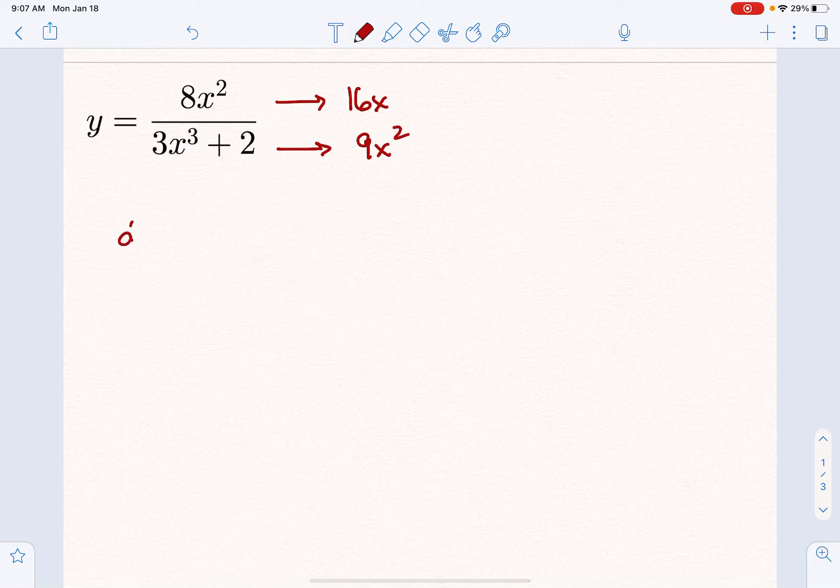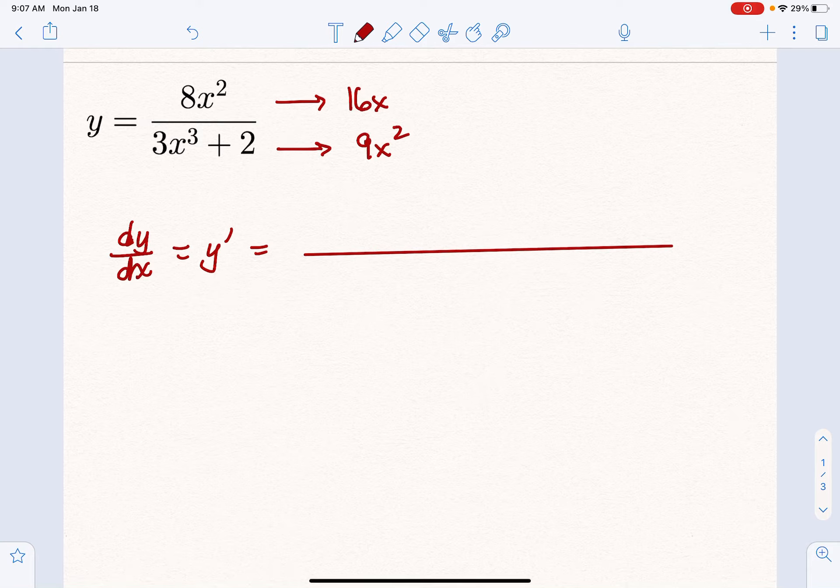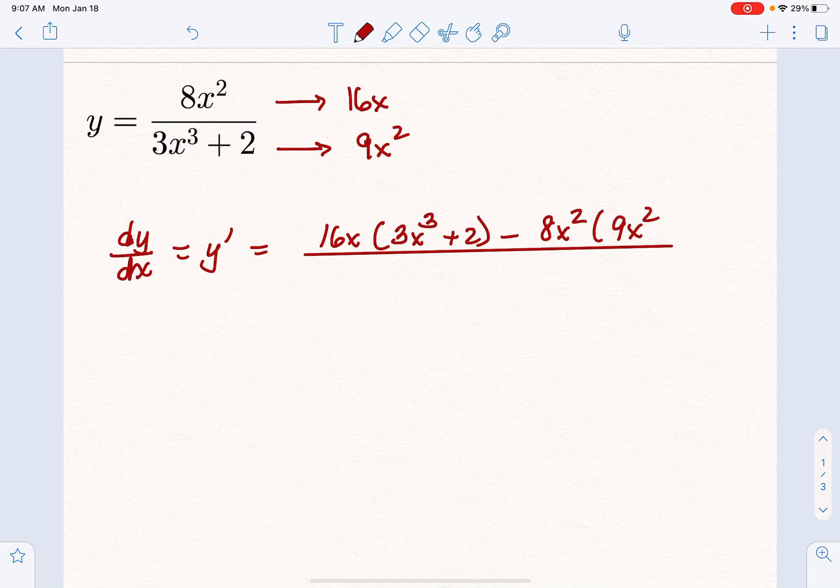That means we can write dy/dx (or y prime if you want to). Since it's a quotient, I'm going to put a fraction bar here. It's the derivative of the numerator, which is 16x, times the denominator (3x³ + 2), minus the numerator (8x²) times the derivative of the denominator (9x²), all over the denominator squared.